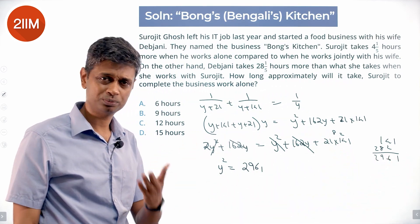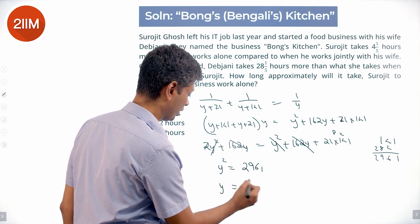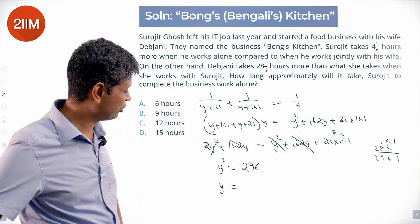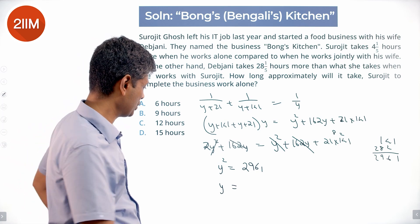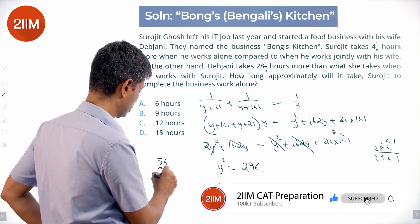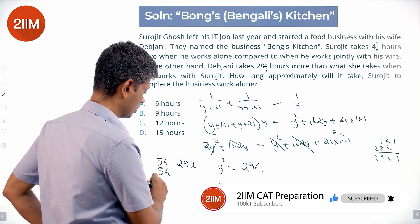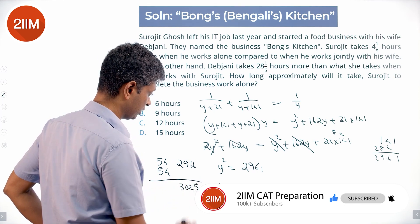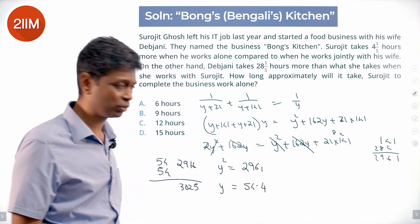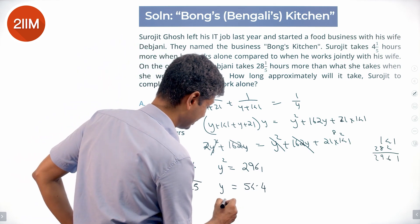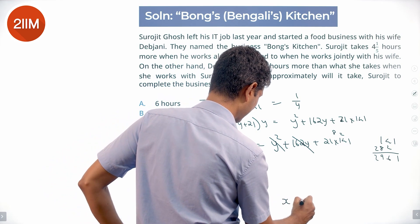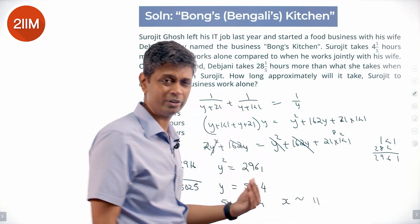Now we just find y from y² = 2961. We know 55² = 3025 and 54² = 2916, so y is between 54 and 55, closer to 54. Since y = 5x, we get x ≈ 54/5, which is nearly 10.8, a little less than 11.